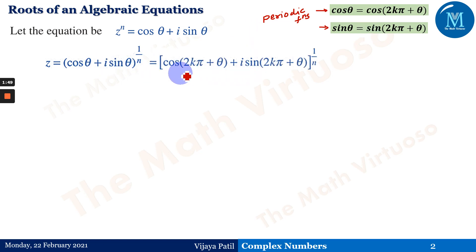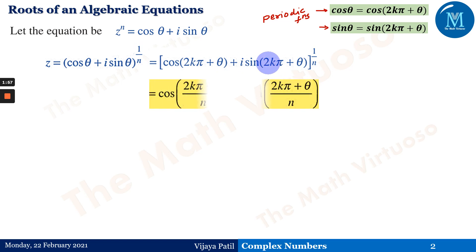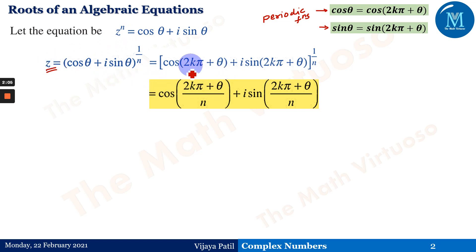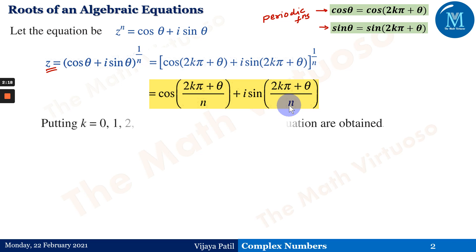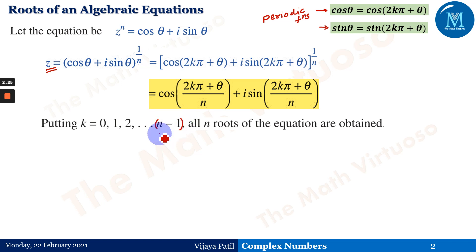Therefore, cos θ can be rewritten as cos(2kπ + θ), and similarly sin θ can be rewritten as sin(2kπ + θ), to the power 1/n. We are taking the nth root of this complex number, and according to De Moivre's theorem, this 1/n comes into the angle, giving us cos((2kπ + θ)/n) + i sin((2kπ + θ)/n).